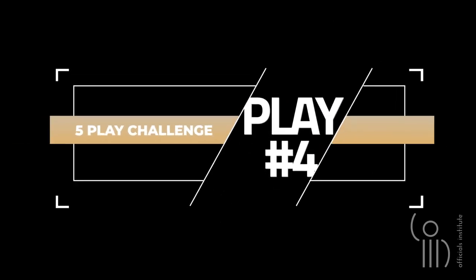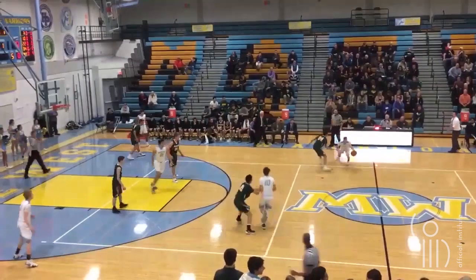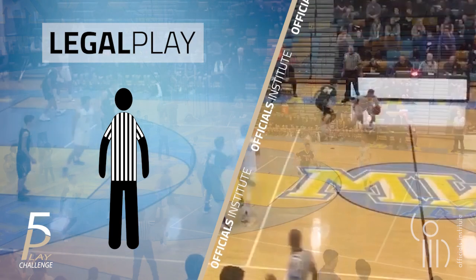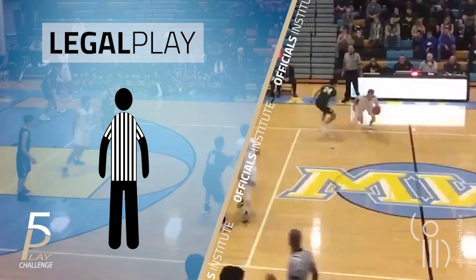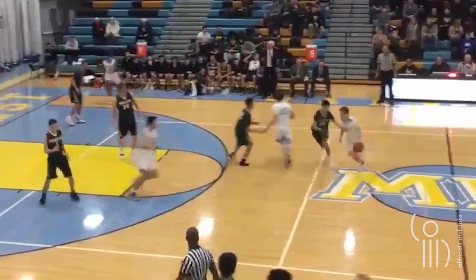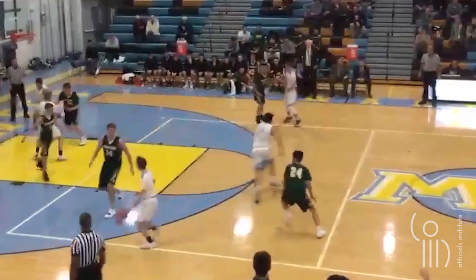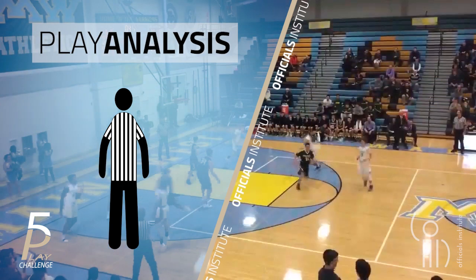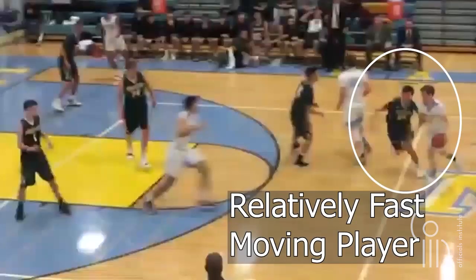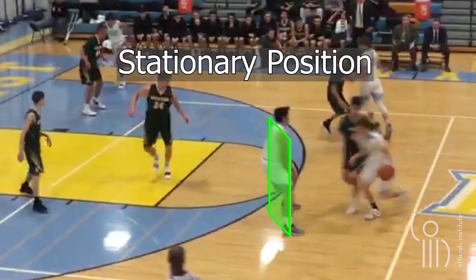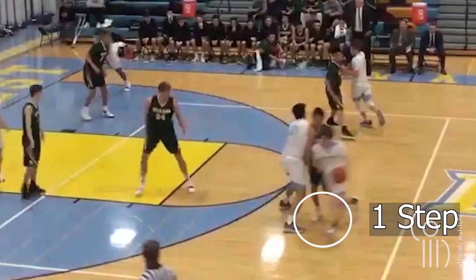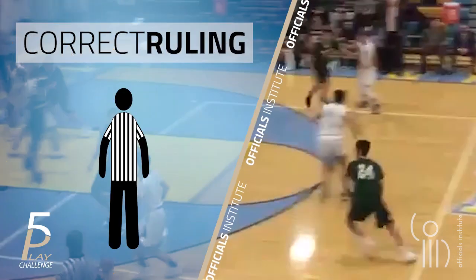This is play number four. The speed of the player is rather quick. The screener stops short of contact, but based on the speed of his opponent, a two-step allowance seems more appropriate here. Tough play, but that screen should have been ruled illegal.